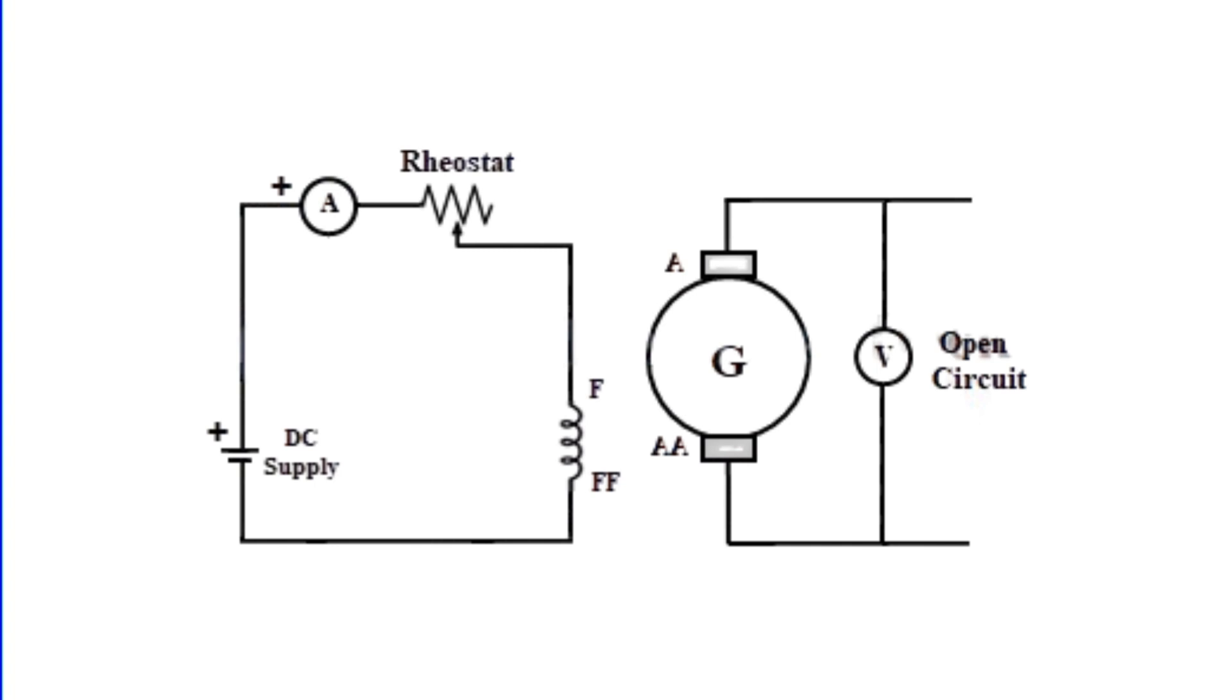The image shows the experimental setup. The field winding is separated from the armature circuit. It's connected in series with an ammeter to measure field current and a rheostat to control resistance. An external DC source is connected to excite the field winding. The armature circuit is open circuited. A voltmeter is connected across the armature terminals to measure generated EMF.